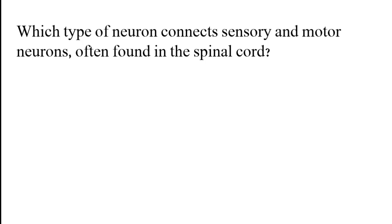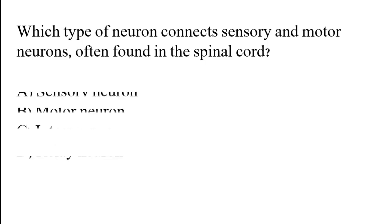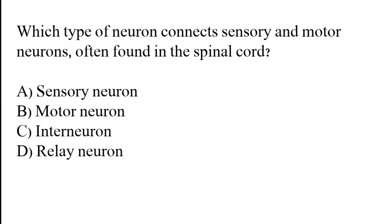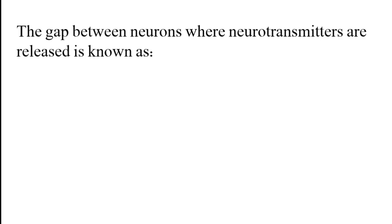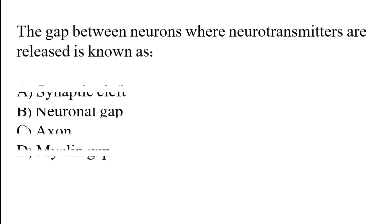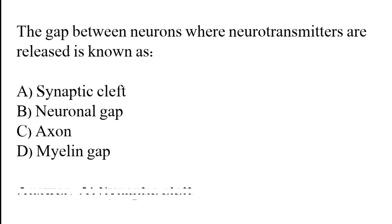Which type of neuron connects sensory and motor neurons, often found in the spinal cord? The correct answer is option C. Interneuron is the type of neuron which connects sensory and motor neurons, often found in the spinal cord. The gap between neurons where neurotransmitters are released is known as: synaptic cleft, neuronal gap, axon, or myelin gap. The correct answer is option A — the synaptic cleft.